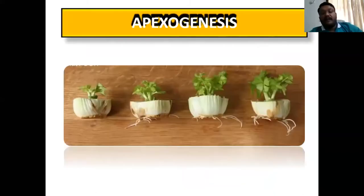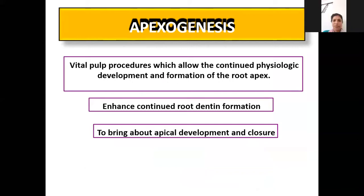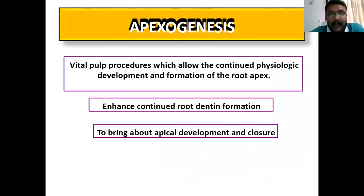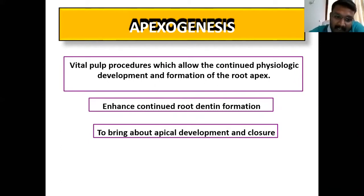First we'll talk about apexogenesis, which comes under vital pulp therapy. By definition, it is a vital pulp therapy procedure which allows the continued physiological development and formation of the root apex — where the entire root apex is formed by itself. You are not inducing formation, not placing a material to close the barrier; normal root development occurs. That is called apexogenesis.